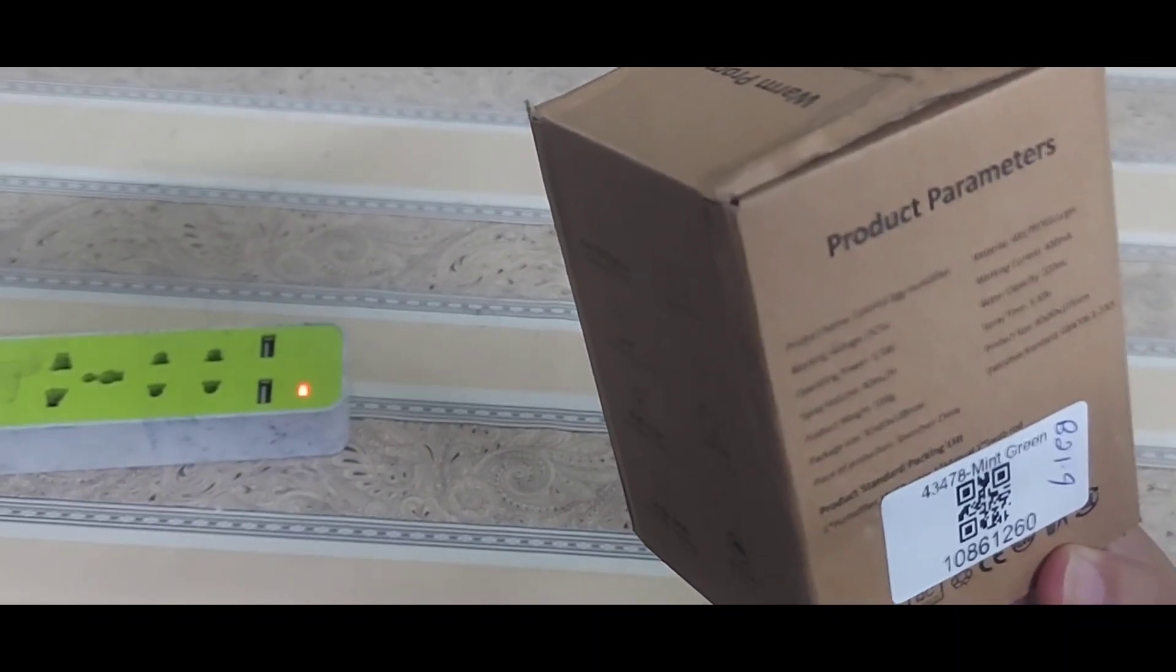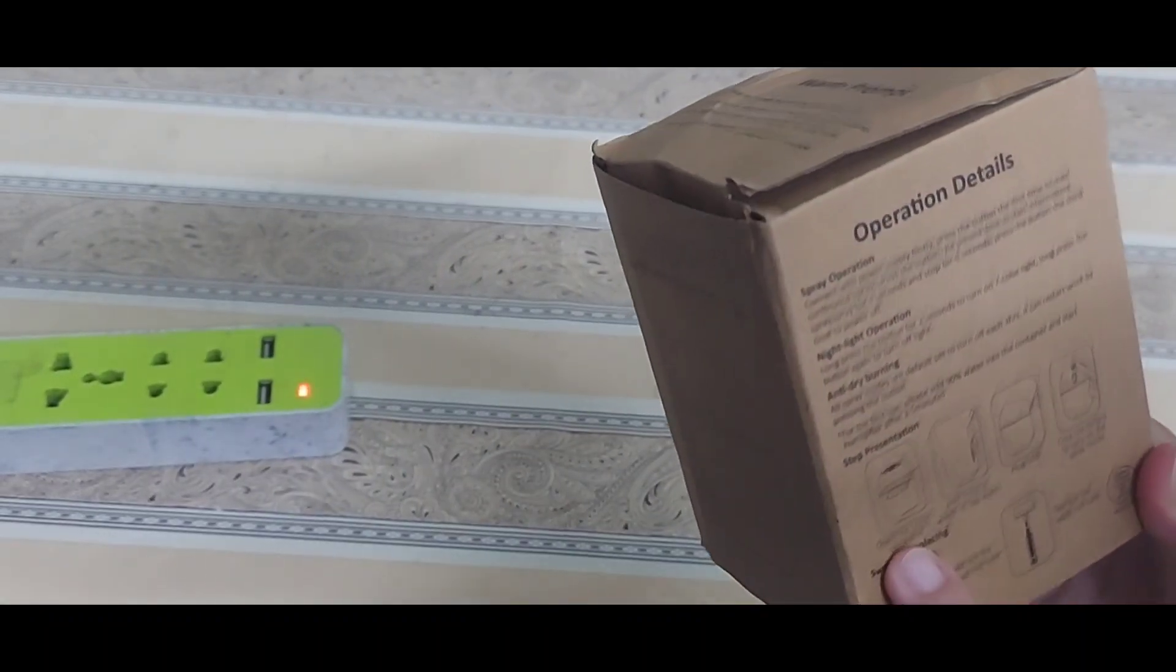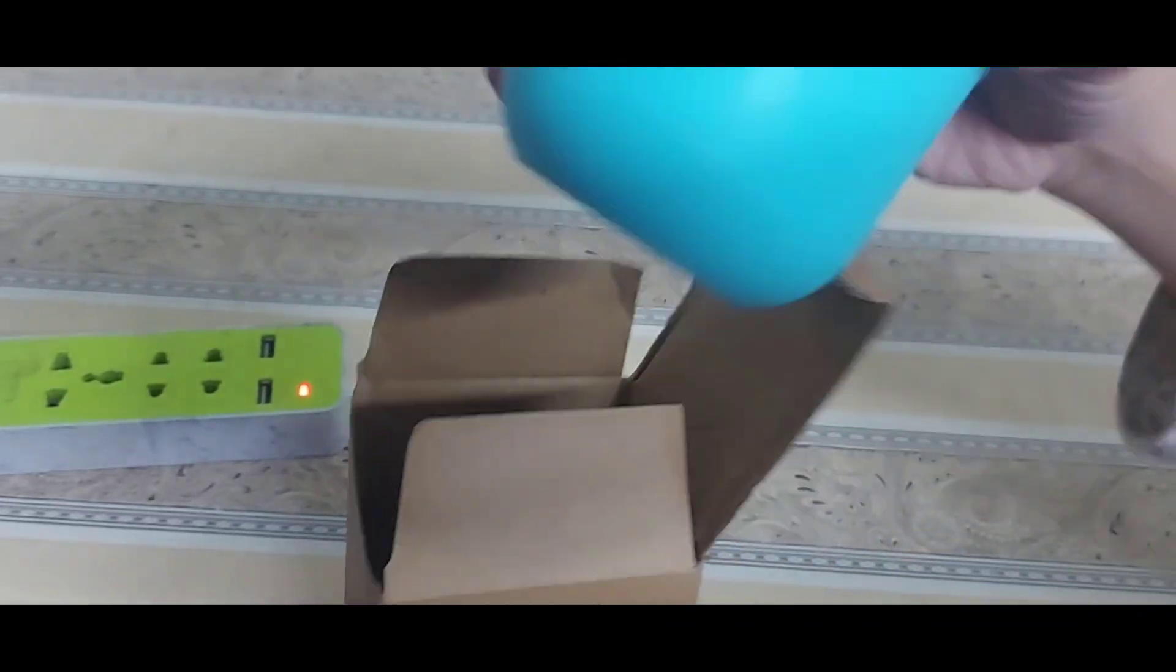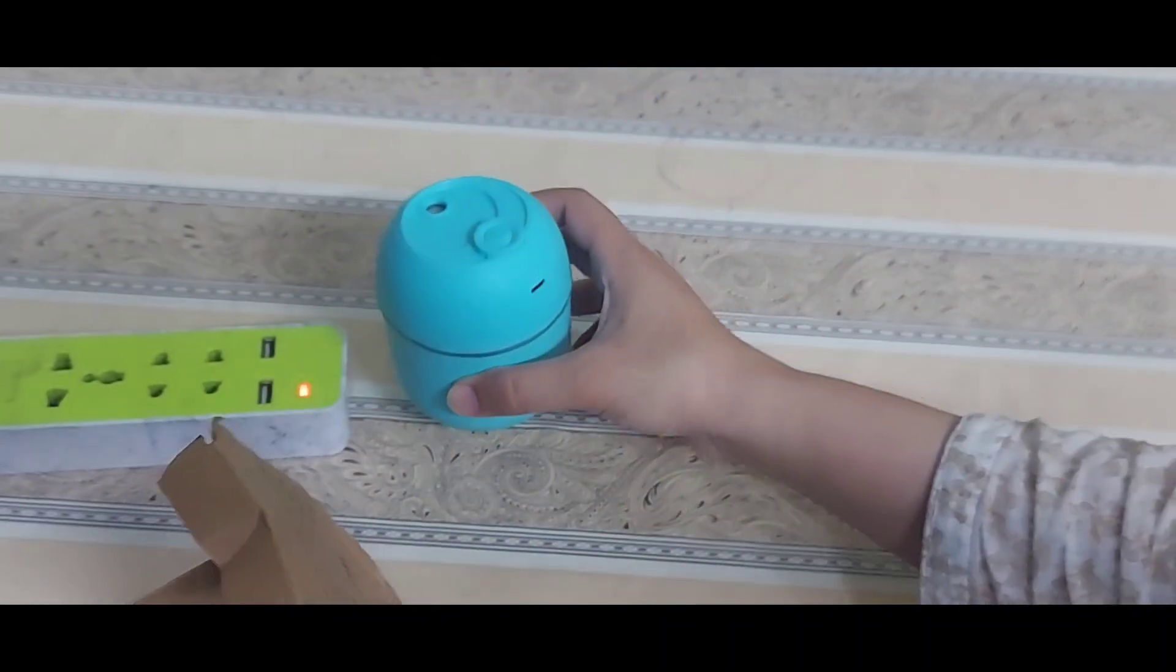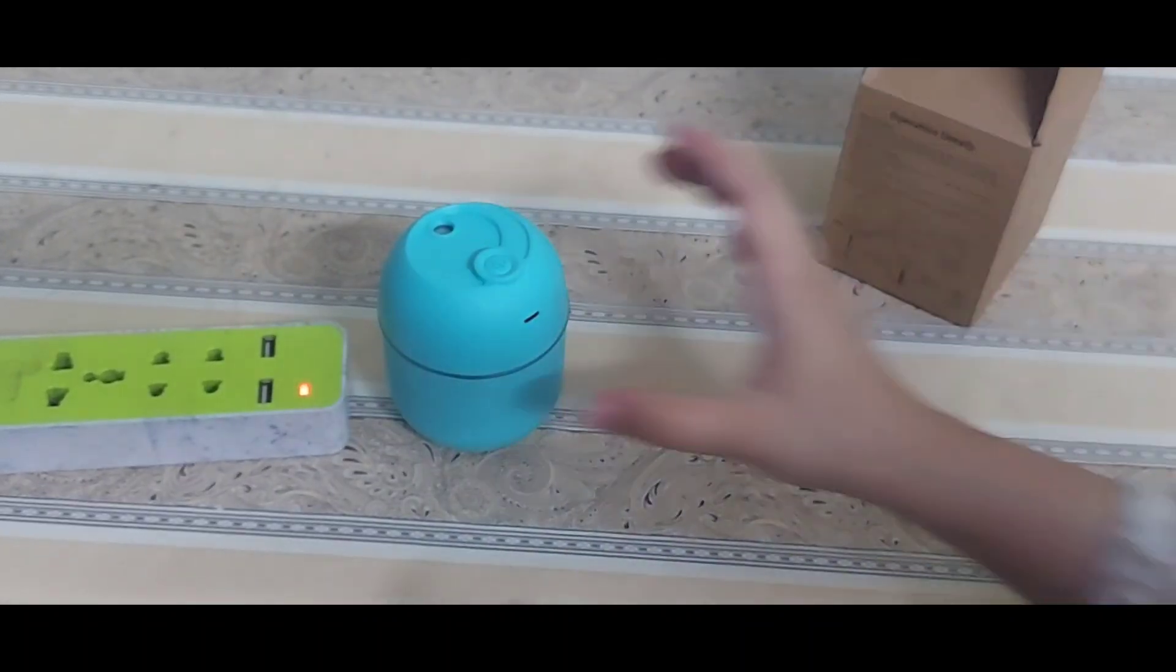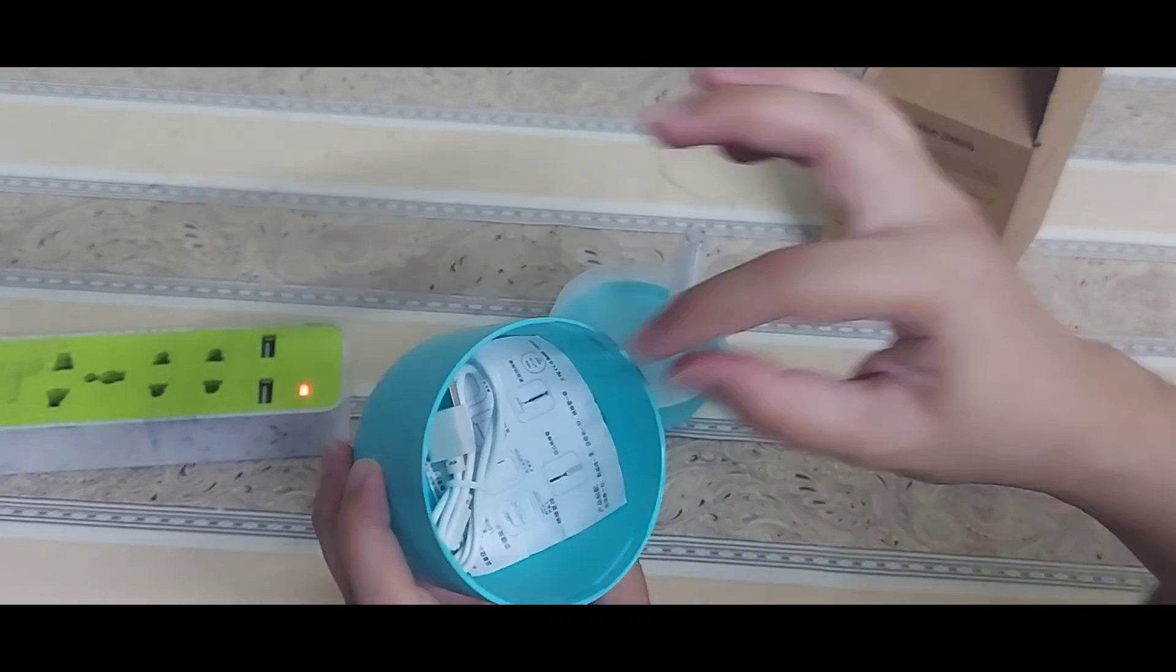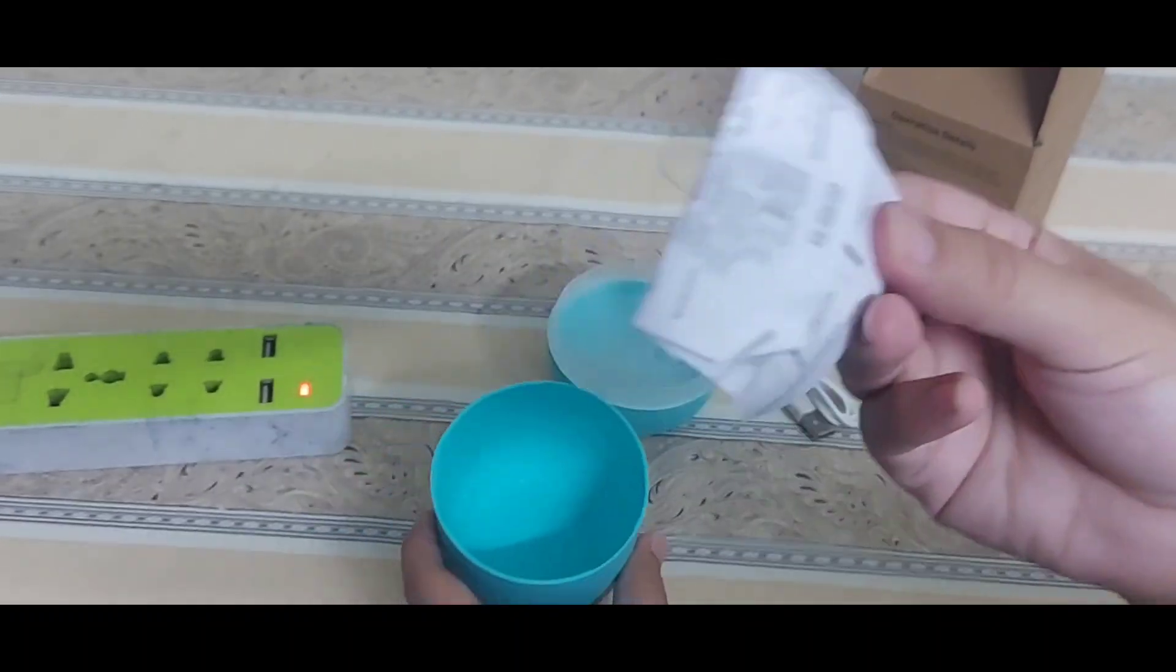It looks very cute. So what we have to do is open the cover. Let's open it. The first step is you have to open the cover clockwise. Okay, we opened it. It has this rod attached to it with a connecting wire.